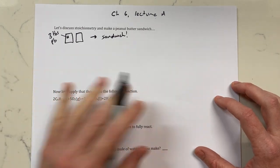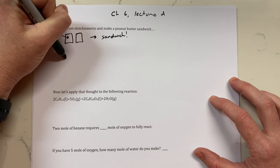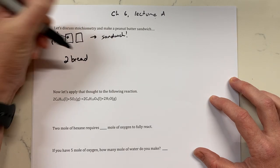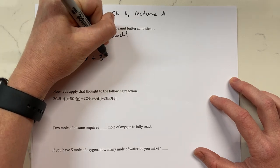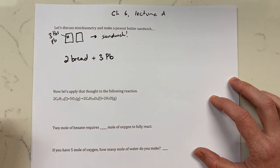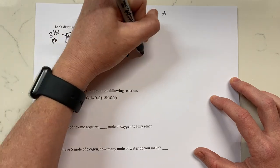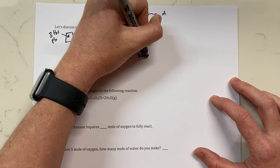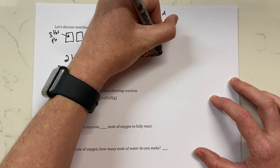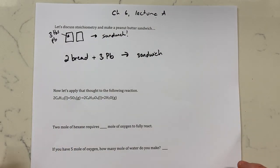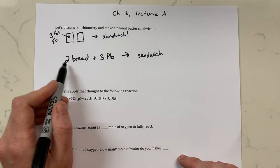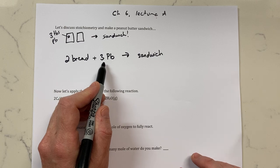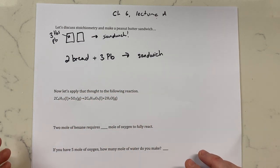If we were to put this in terms of a reaction, we would say for every two bread, you require three peanut butter to make one sandwich. What a chemical reaction does is it gives you ratios of reactants to products and tells you you need two pieces of bread and three tablespoons of peanut butter to make one delicious sandwich.